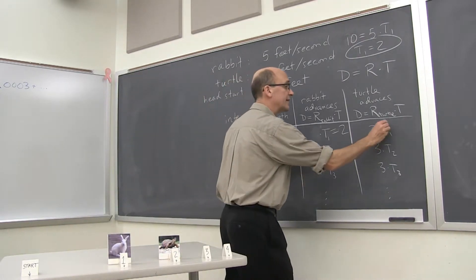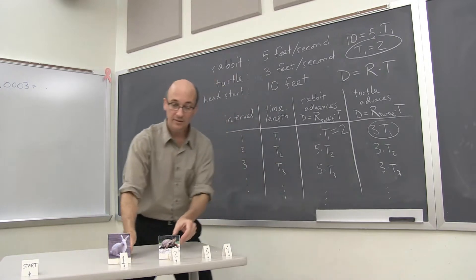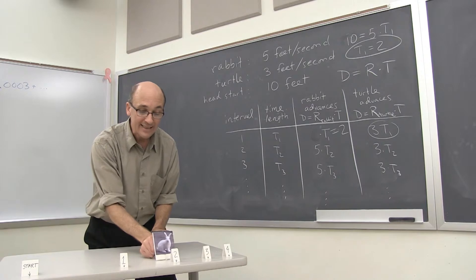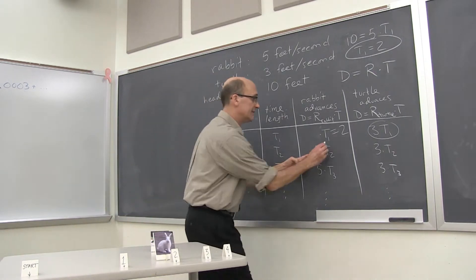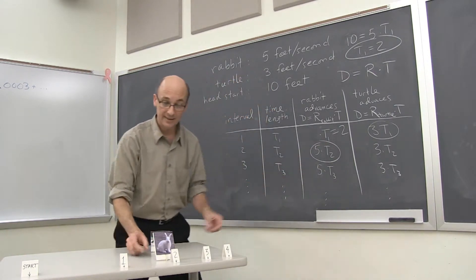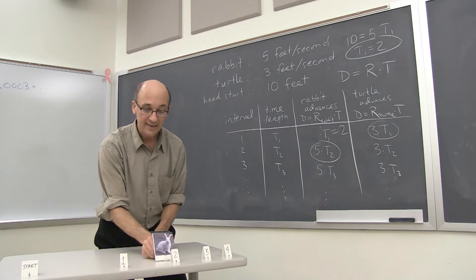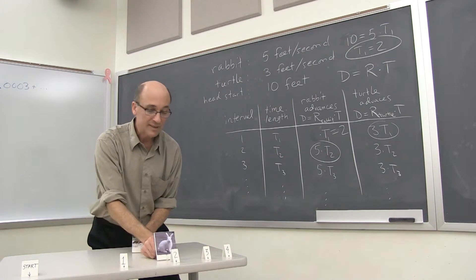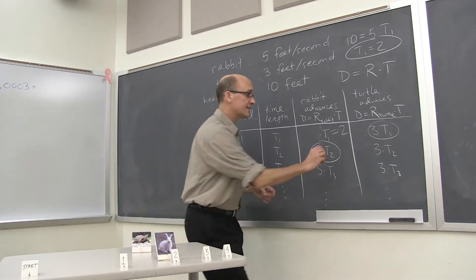The turtle covers that first distance from one to two in the first interval. The rabbit covers that distance in the second. Say that again. The rabbit covers that same distance. The turtle moving from one to two. The rabbit moves from one to two in the second interval. These are the same.